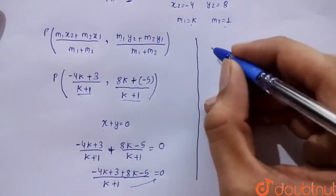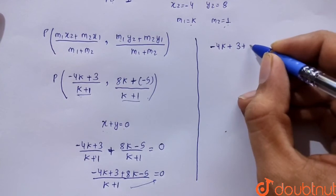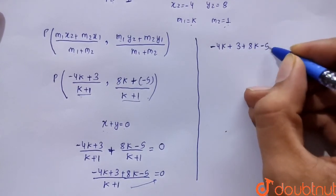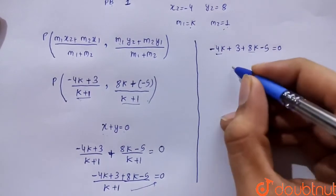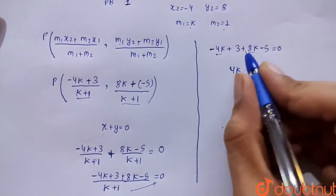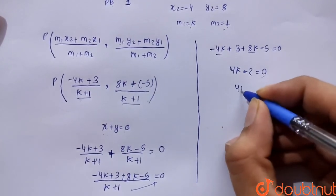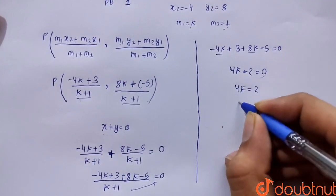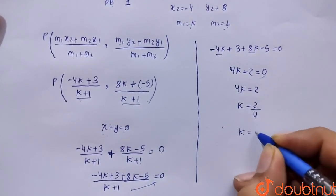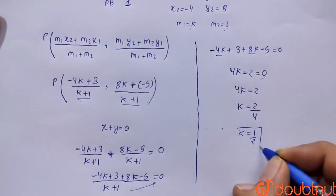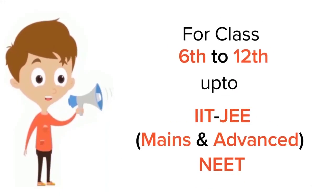So we are left with minus 4k plus 3 plus 8k minus 5 equals to 0. Combining: minus 4k plus 8k gives 4k, and 3 minus 5 gives minus 2, so 4k minus 2 equals 0, which gives 4k equals 2, and therefore k equals 2 by 4, which simplifies to 1 by 2. So the required value of k is 1 by 2.